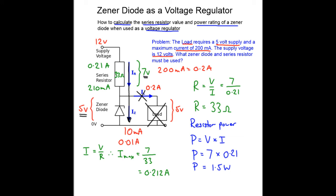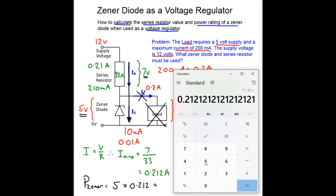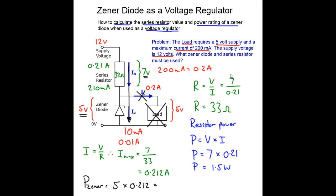Now we know our Zener current, so the power for the Zener diode is therefore going to be the voltage across the Zener which is 5 volts times by the current through the Zener which is 0.212 amps maximum. So that equals 5 times 0.212 amps equals 1.06 watts, and we always need to go up a little bit because that's a minimum power rating, so we want at least 1.1 watts.